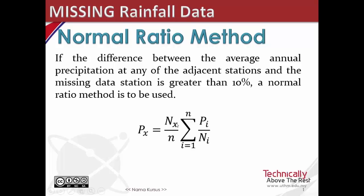Px is equal to Nx over N multiplied with the summation of Pi over Ni.